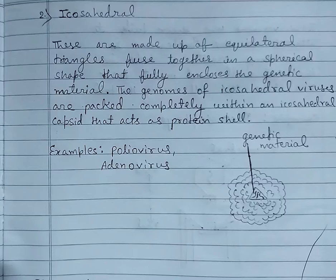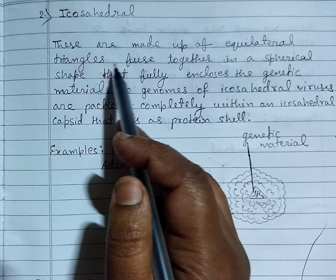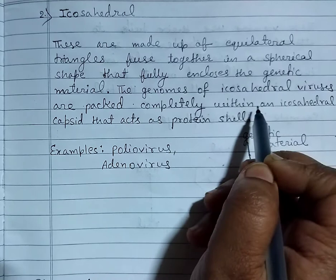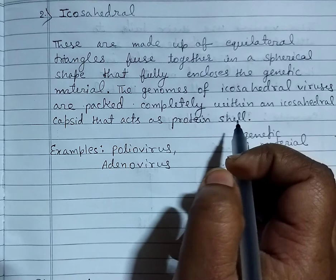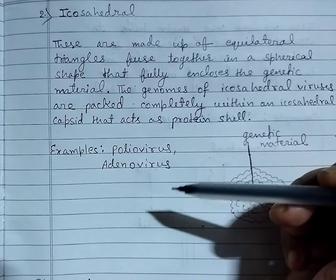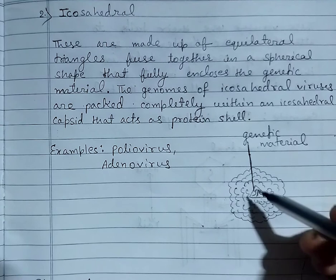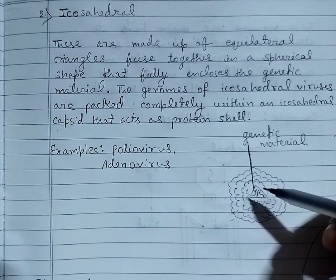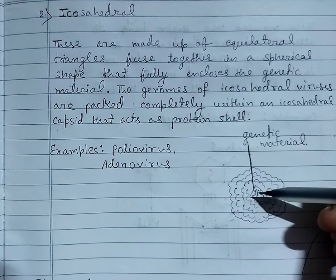Second is icosahedral. These are made up of equilateral triangles fused together in a spherical shape that fully encloses the genetic material. The genomes of icosahedral viruses are packed completely within an icosahedral capsid that acts as a protein shell. Examples are poliovirus and adenovirus. This diagram shows the icosahedral shape — it has many sides and faces, each side being an equilateral triangle, making a spherical shape that fully encloses and protects the genetic material.